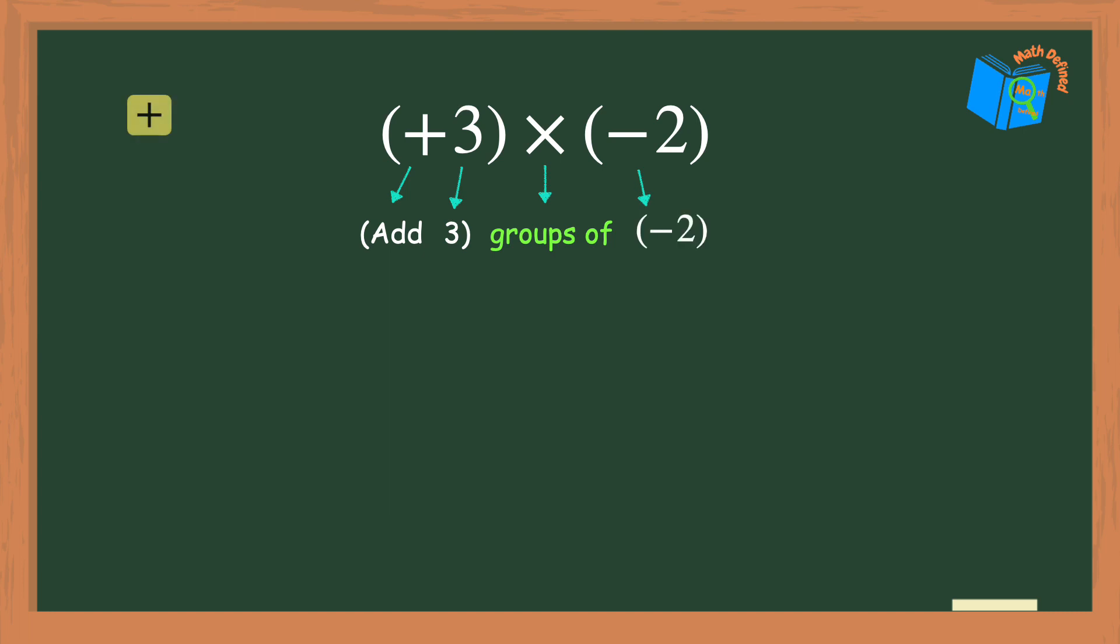Now let's take a look at these counters. What do they mean? Well, the yellow counter is equal to positive 1 and the red counter is equal to negative 1. The next step is to use the counters to represent the words in the math sentence which says to add three groups of negative 2.